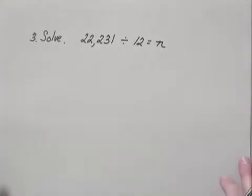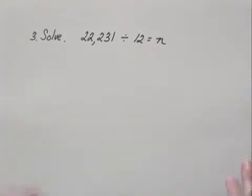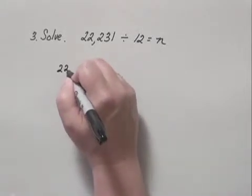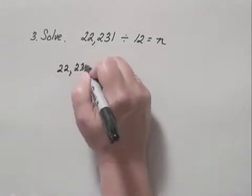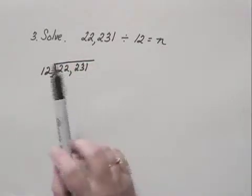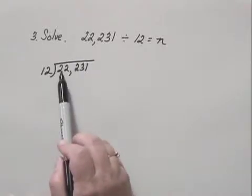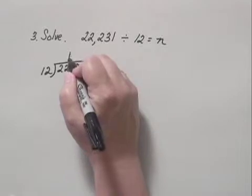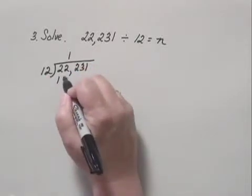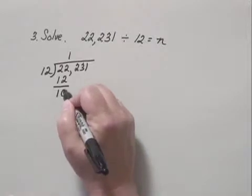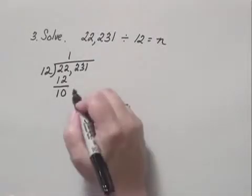That's step 3 of the process. To solve this equation we need to carry out the division. We divide 22,231 by 12. Does 12 go into 2? No. Does 12 go into 22? Yes, one time. 1 times 12 is 12. We subtract and get 10, then bring down the next digit which is 2.